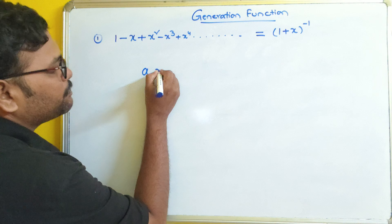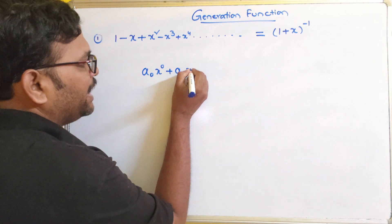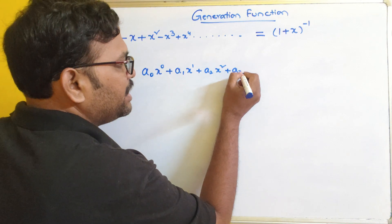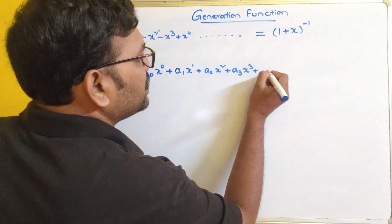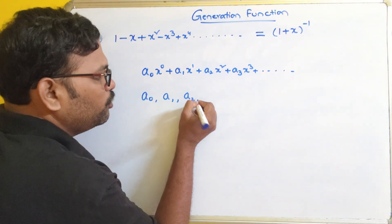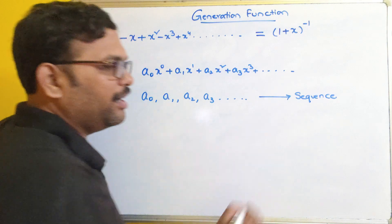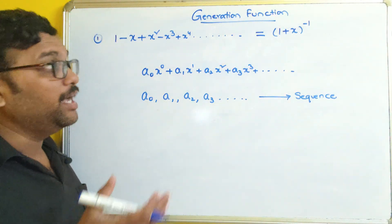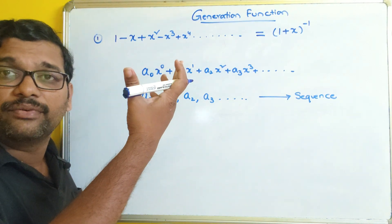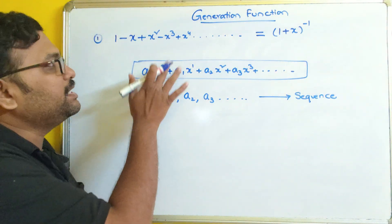A generating function is generally written as a₀x⁰ plus a₁x¹ plus a₂x² plus a₃x³ and so on, where a₀, a₁, a₂, a₃ and so on form the sequence. So we apply the sequence constants to this equation and compare whether it matches a given formula. If it does, directly we can write the function.